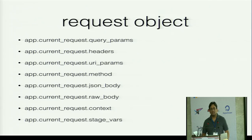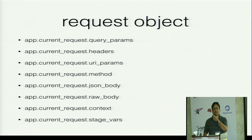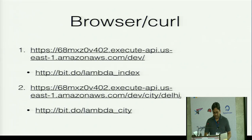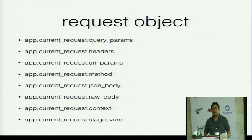Chalice gives you a current_request object with multiple dictionaries. Query params are what you get in a GET request — the things after the question mark. Headers can contain authentication details. URI params are what was sent in slash city slash Delhi. The method is mostly POST or GET, or also PUT or DELETE. The JSON body is a dictionary of all key-values sent when a form does a POST submit.